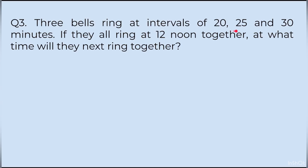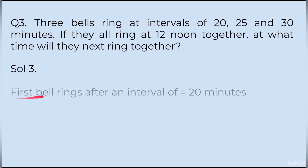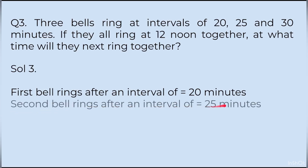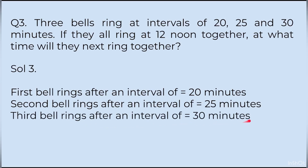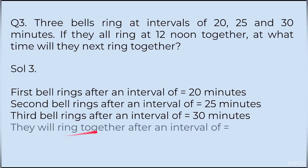Question 3: Three bells ring at intervals of 20, 25 and 30 minutes. If they all ring at 12 noon together, at what time will they next ring together? As discussed, this question gives a bigger number than 30 as the answer — the bells will not ring simultaneously after 20, 25 or 30 minutes; it has to be a bigger number. For a bigger number we find multiples — the Least Common Multiple. First bell: 20 minutes, second bell: 25 minutes, third bell: 30 minutes. They will ring together after an interval equal to the LCM of 20, 25 and 30.